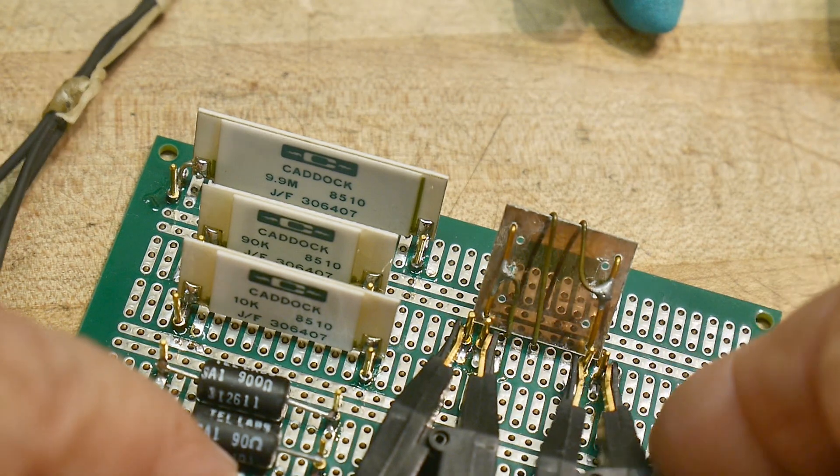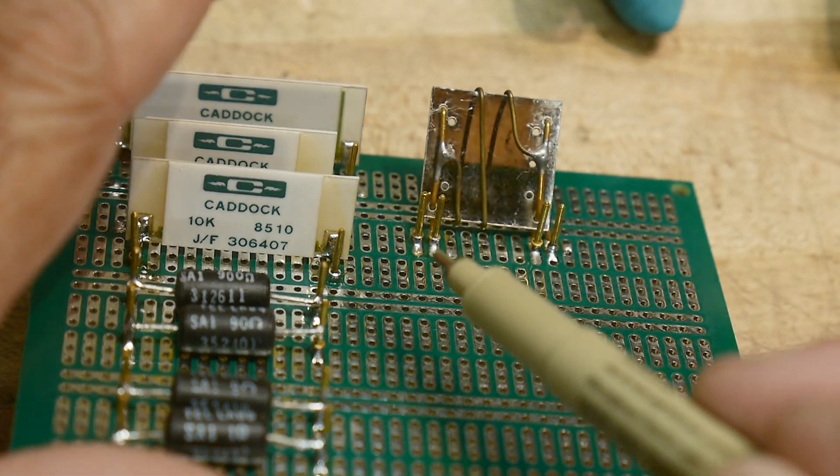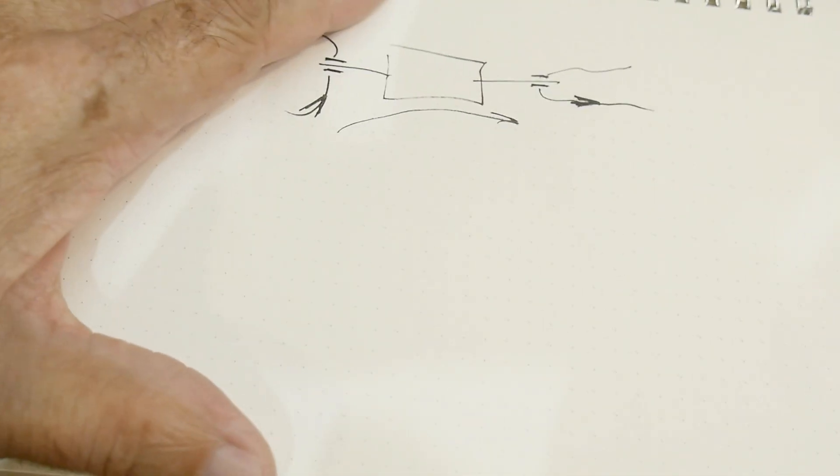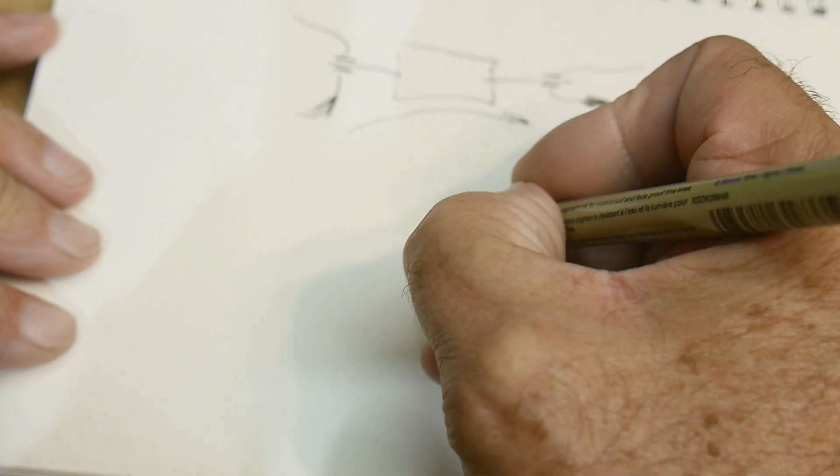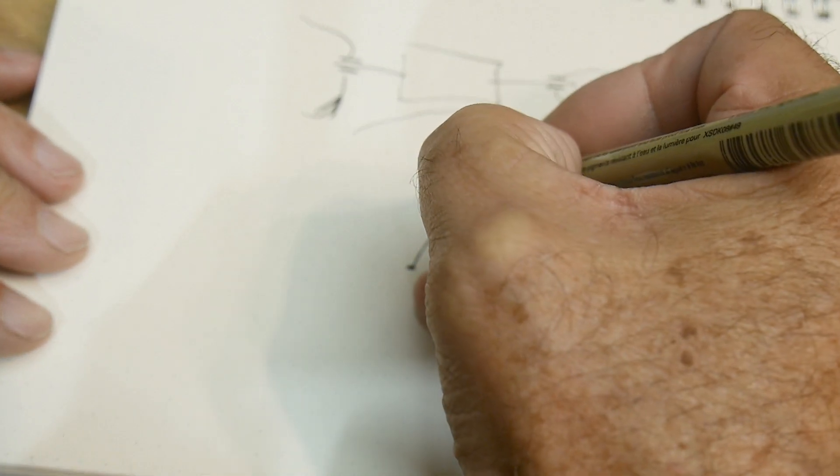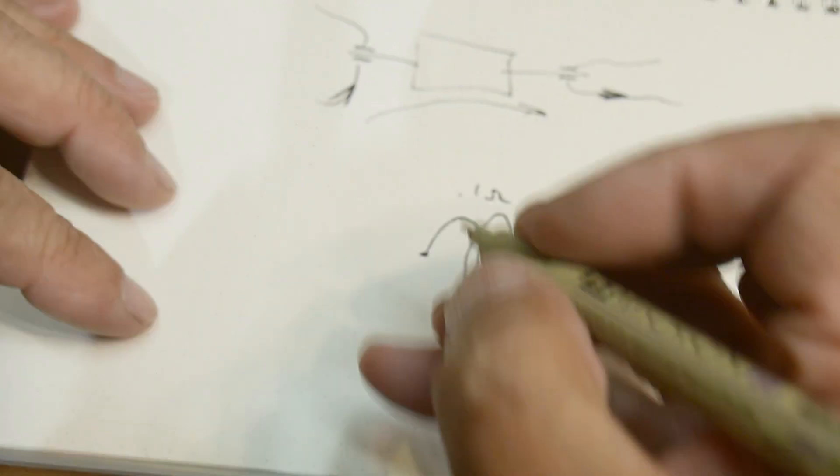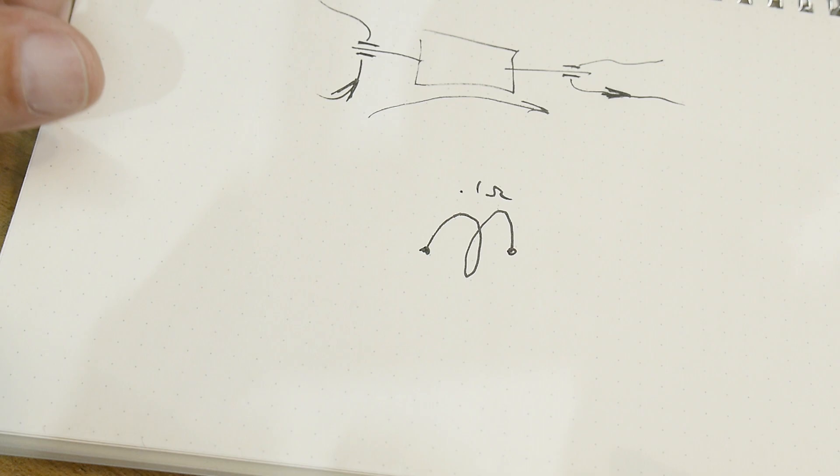I have clip leads here but the clip leads aren't onto a single wire, they're actually onto two different posts. There's two posts on this side and two posts on this side. So let me draw a picture, it'll make more sense.